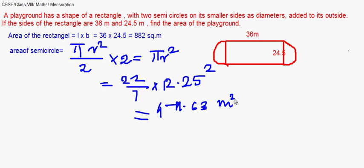So the total area will be 882 plus 471. I can round it up to 472. If you are rounding it off, do mention a note that you have rounded it off. Otherwise, you can keep it as 1353.63 up to two decimal places and this is in square meters.